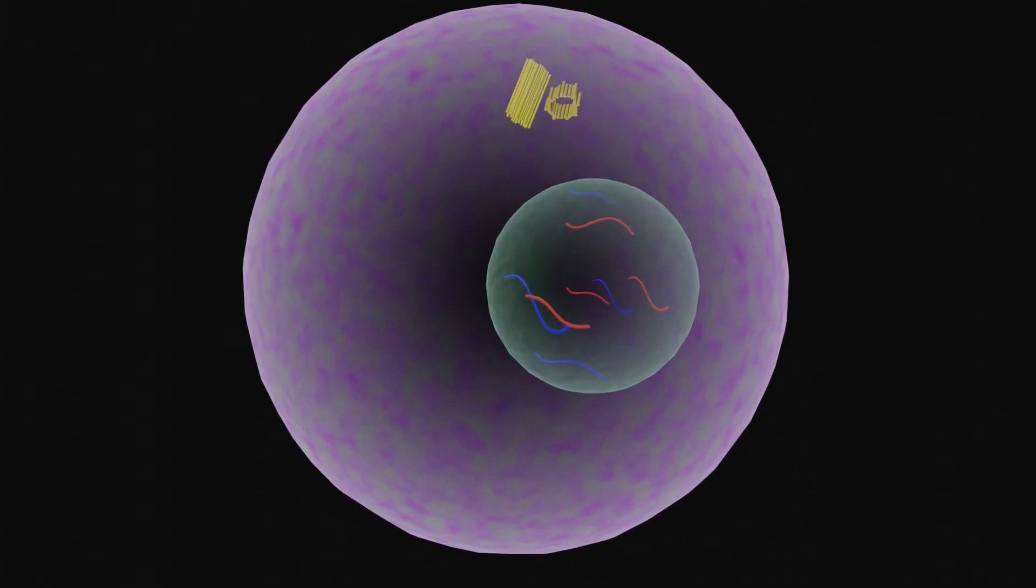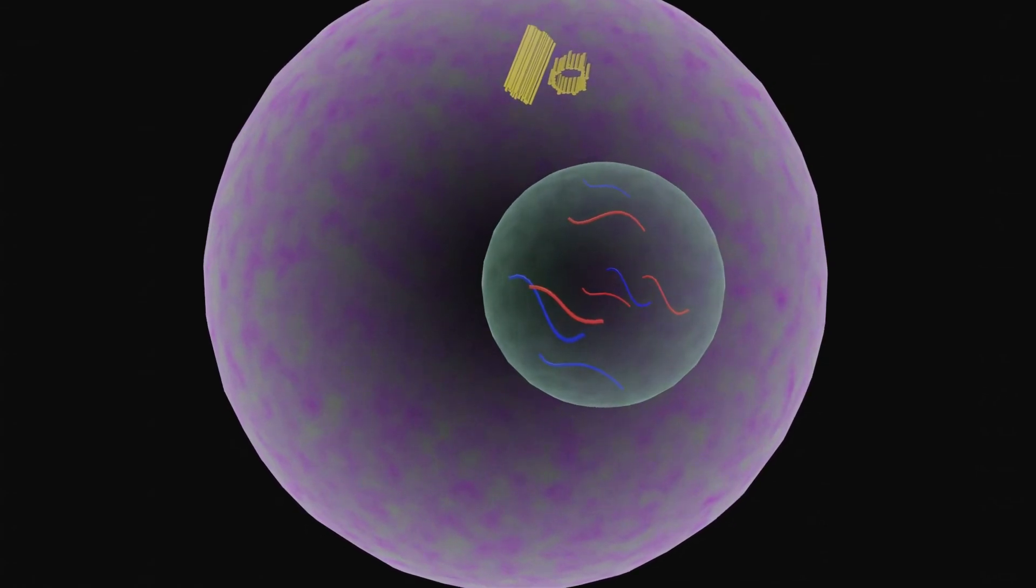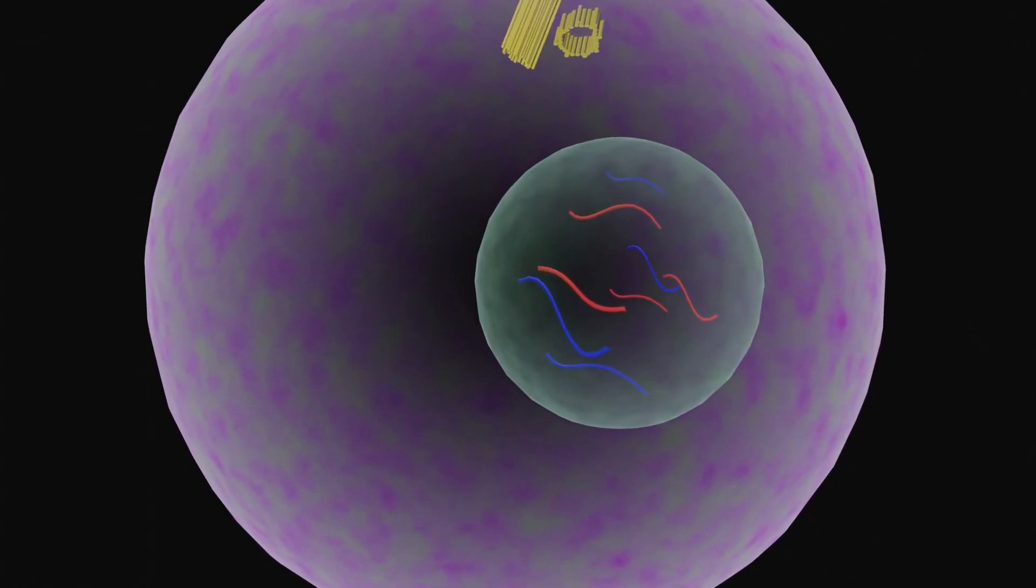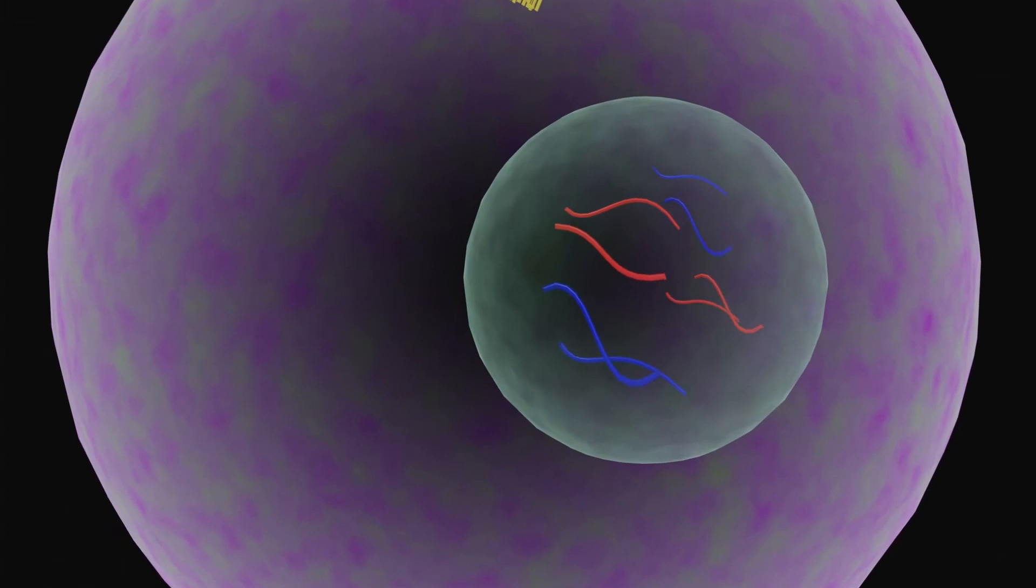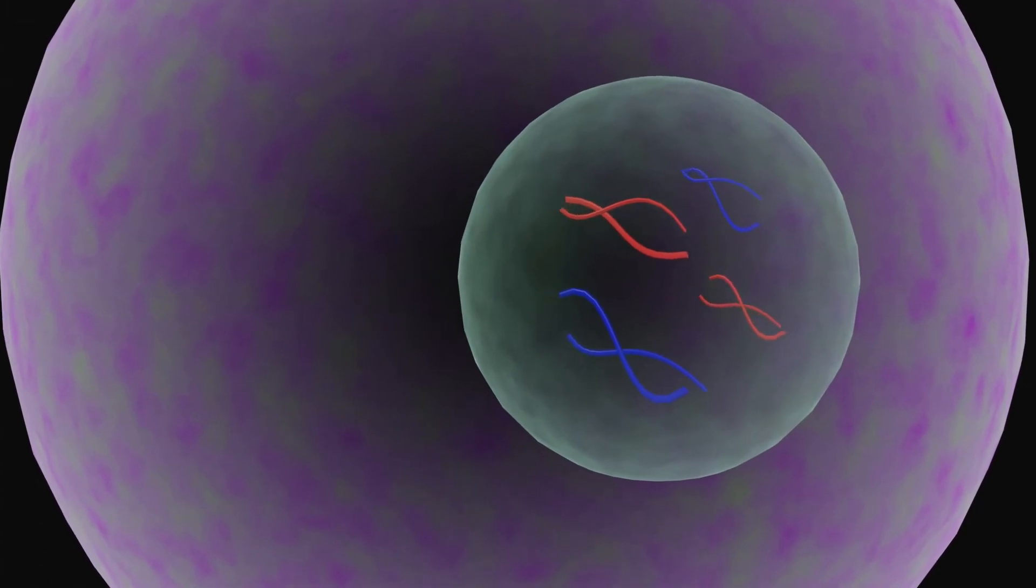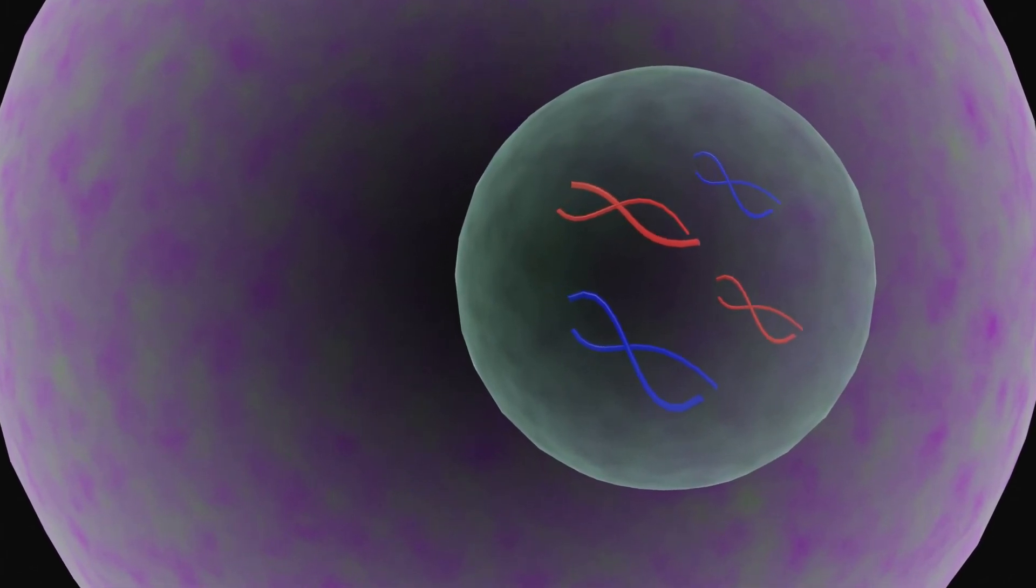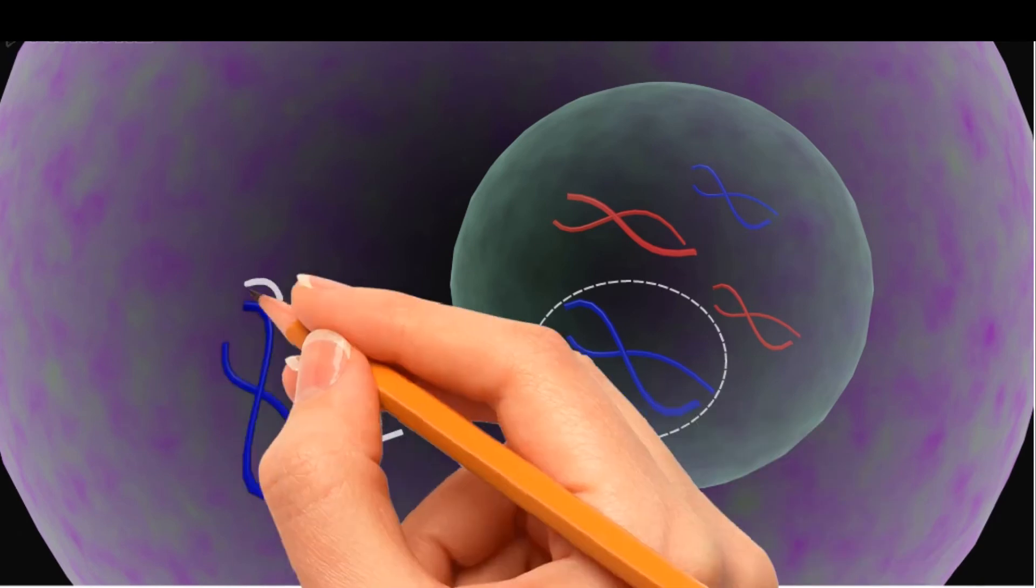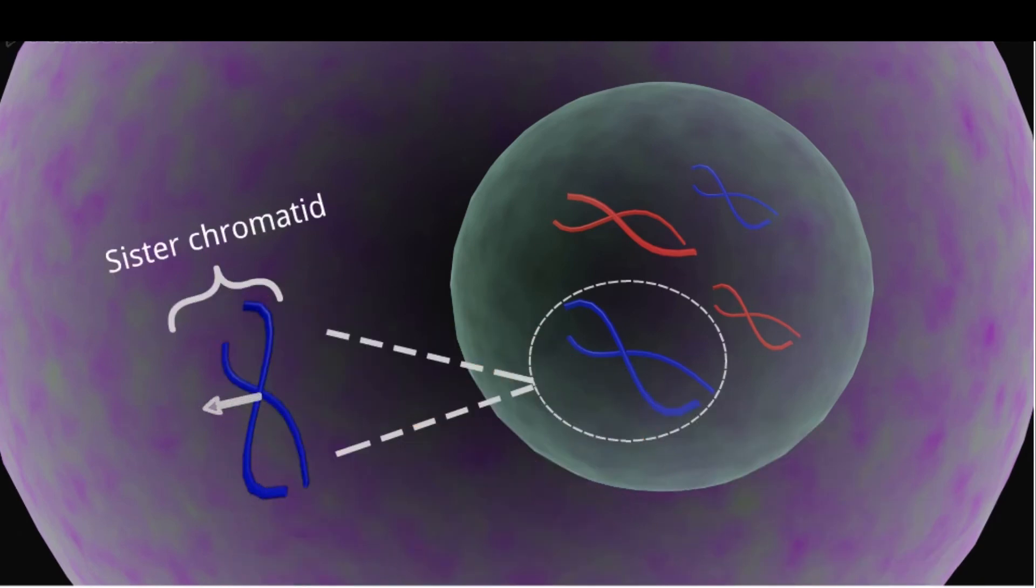Prophase immediately follows the S and G2 phases of the cycle and is marked by condensation of the genetic material to form compact mitotic chromosomes. Chromosomes are composed of two chromatids attached at the center called centromere.